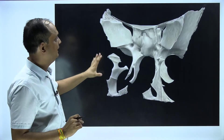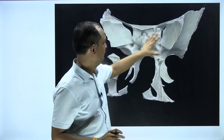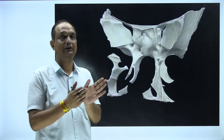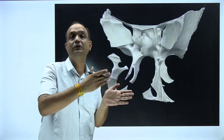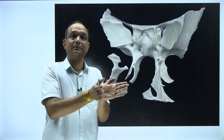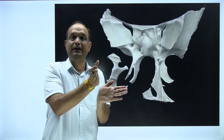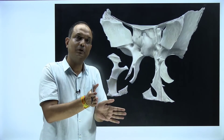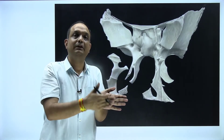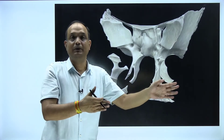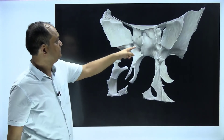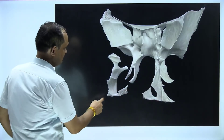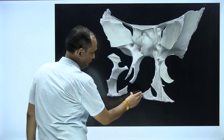Here you can see the sphenoid bone and the two palatine bones. The pterygopalatine fossa is anterior to the sphenoid bone, behind the maxilla, medially bounded by the palatine bone, and laterally open. Posteriorly: sphenoid bone; medially: palatine bone; anteriorly: maxilla; laterally: open. The horizontal plates of the palatine bone join together to form the posterior part of the hard palate.